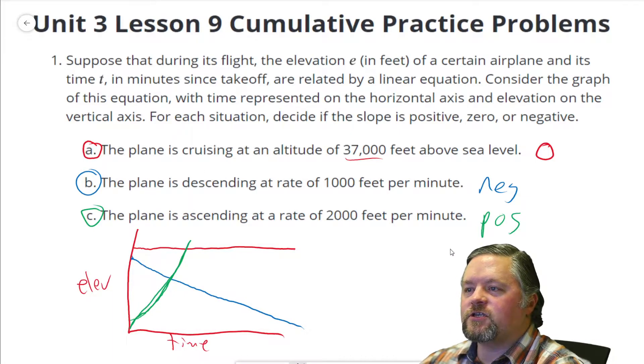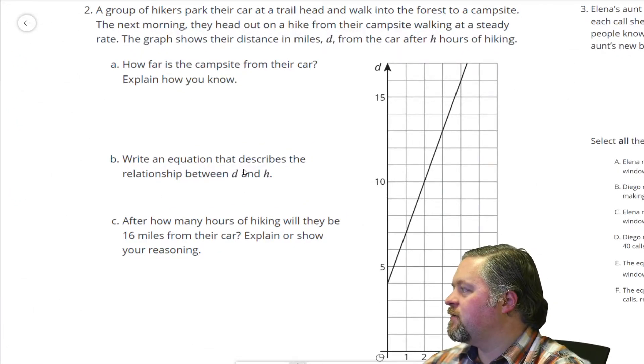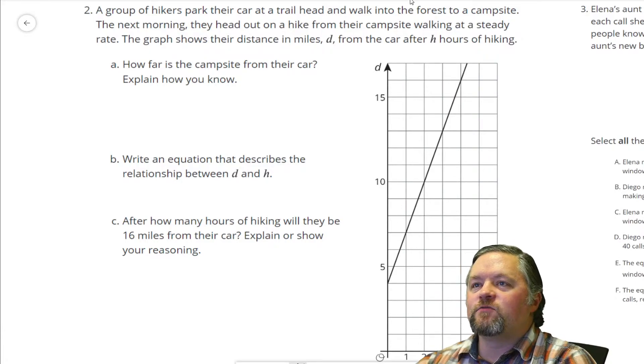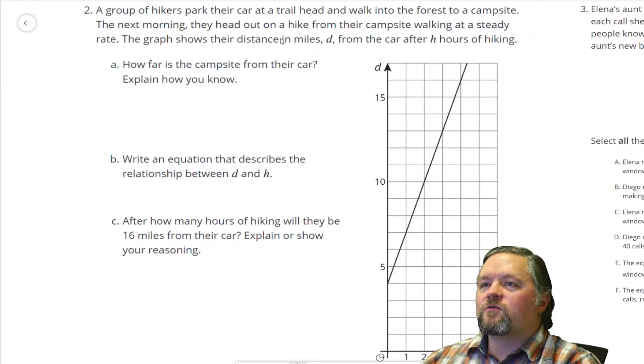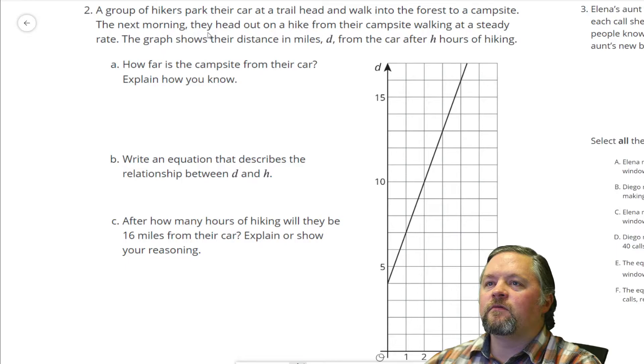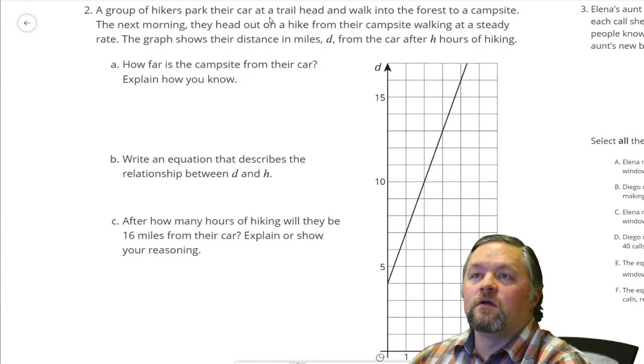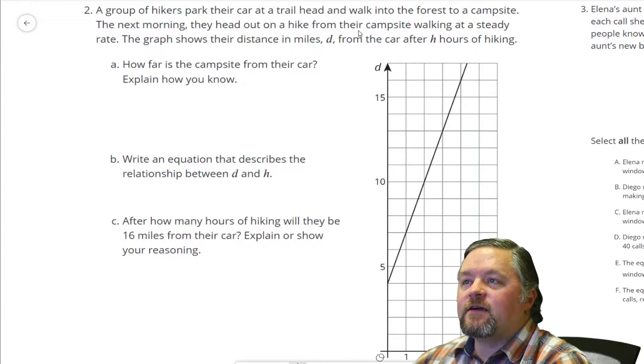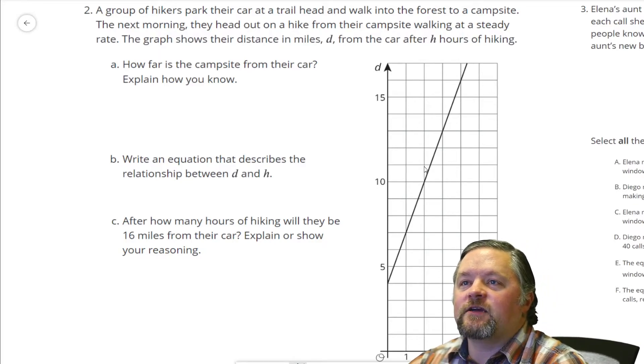Okay, next question is a group of hikers park their car at a trailhead and walk into the forest to a campsite. The next morning, they head out on a hike from their campsite, walking at a steady rate. The graph shows their distance in miles D from the car after H hours of hiking. So this graph shows their distance from the car. So they showed up one day, hiked out to a campsite, spent the night. The next day is what this graph is of.